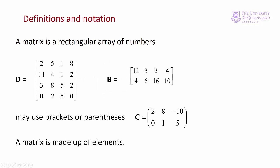Going back, matrix D is a four by four matrix. B has two rows and four columns, so it's a two by four. And C again has two rows but three columns. It's a two by three.